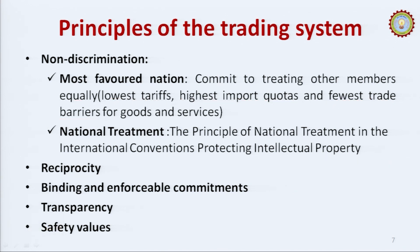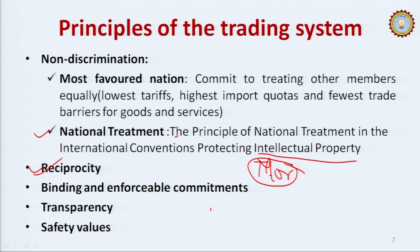National treatment is another principle — it protects intellectual property in international conventions. For example, regarding COVID vaccines, Moderna's vaccine was an invention by a scientist, so intellectual property rights apply. National treatment ensures such creations are protected. Other principles include reciprocity, binding and enforceable commitments, and transparency and safety values.